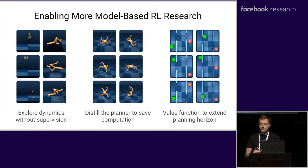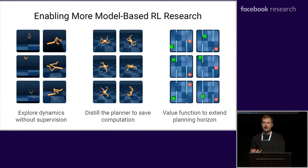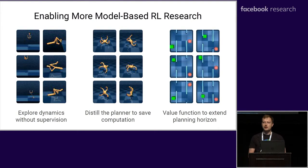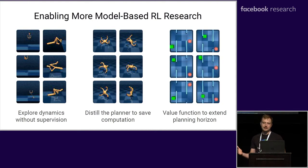Now that we have a recipe for scalable model-based reinforcement learning, this enables many directions for future research. For example, we can learn the dynamics model independently of the task using diversity objectives. We can also distill the result of the planner into a policy network to reduce the planning cost and solve harder tasks. And finally, we can learn a value function to estimate the rewards beyond the planning horizon to solve long horizon tasks.